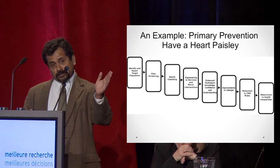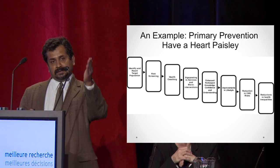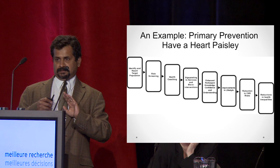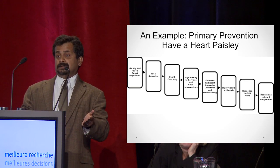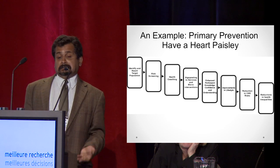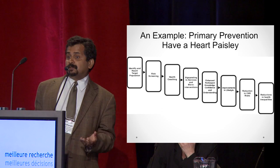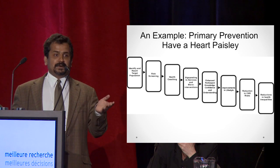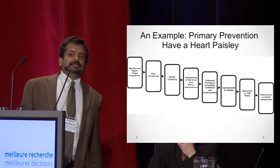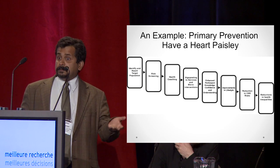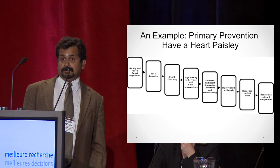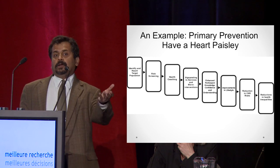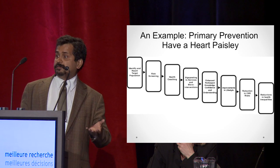Their hope was that by planning an intervention in 15% of the poorest areas and implementing it in Paisley, one of the poorer parts of Scotland, they would actually reach poor people. That's an assumption. If you work through the logical chain, there was a process of identifying and reaching the poorest people, then risk screening, then health coaching, and a whole lot of other interventions. The hope was this would lead toward improved outcomes which, if you did get the poorest people, could result in a reduction in health inequalities.